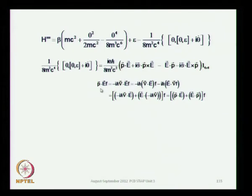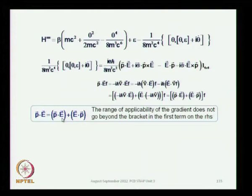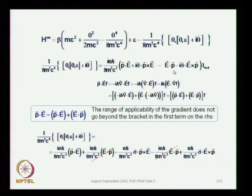Now let us look at this p·E term - p again has a gradient operator, so you have to be careful with it. From a careful handling of this gradient operator, which we have now done a number of times, you see that p·E gives you the scalar p·E + E·p. This is an operator; this is the result of all operations carried out. You can put all of these terms back into the expression for 1/(8m²c⁴). You find that this E·p term cancels another E·p - this is minus E·p - so those two cancel each other.